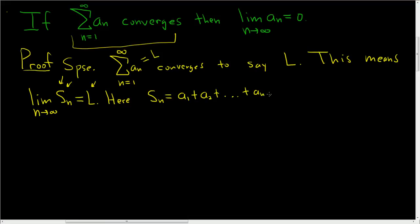Back to the proof. We have to show that this limit is equal to 0. So we have to show that a sub n approaches 0 as n approaches infinity. Well, if you look here, we have a sub n.